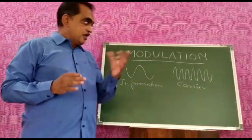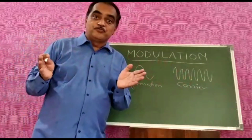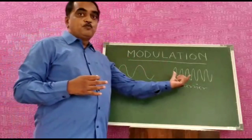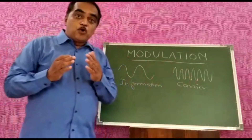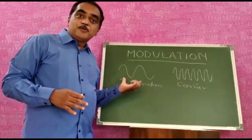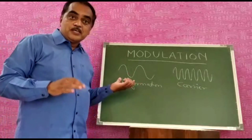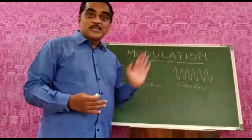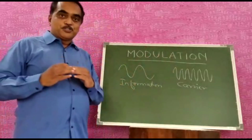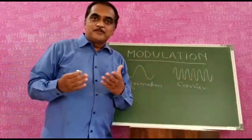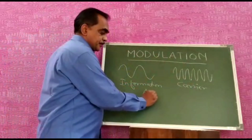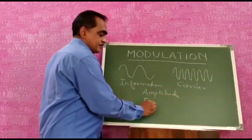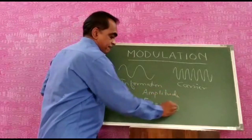A high frequency wave can pierce into the atmosphere, go for a long distance, and will not face attenuation — so it can travel from one point to another. The problem is you cannot make your information wave, which is originally low frequency, into a high frequency wave. So we take support of a high frequency carrier separately. This high frequency carrier will have some parameters: amplitude, frequency, and phase.